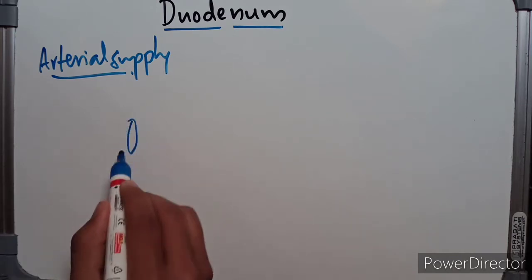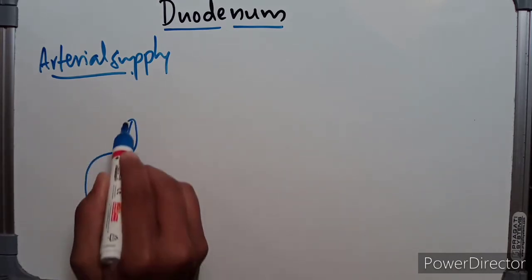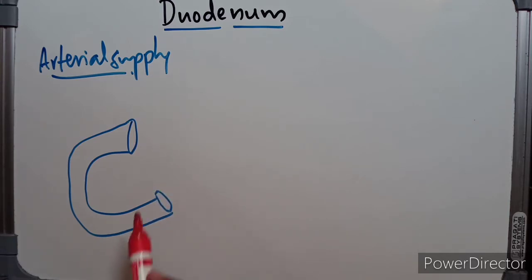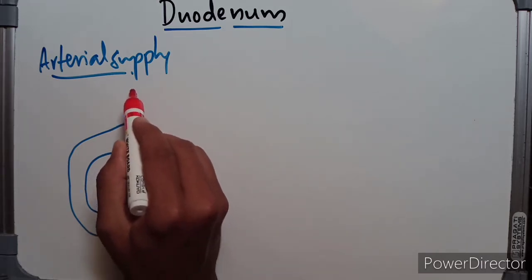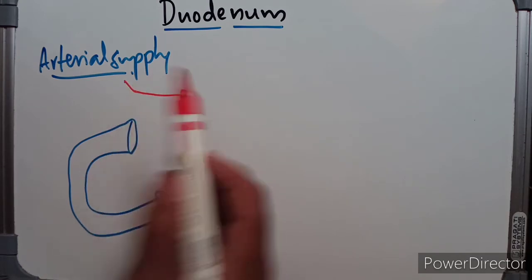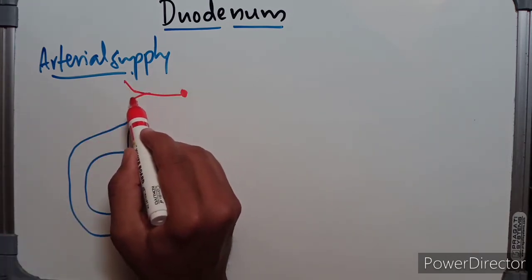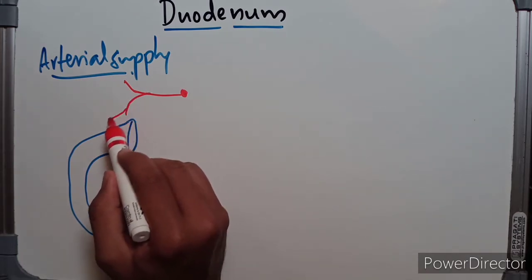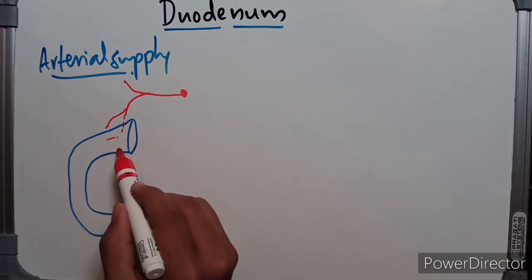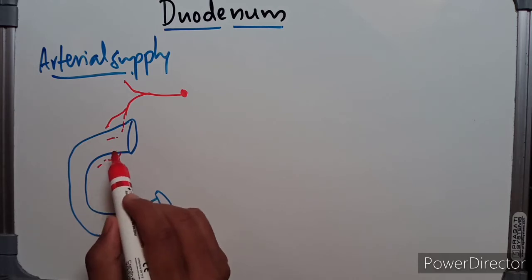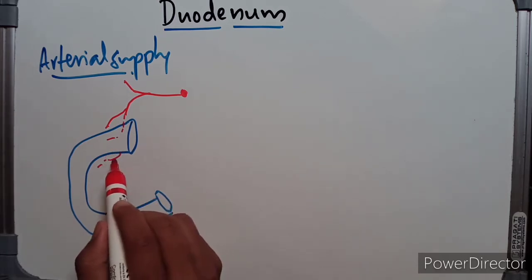The arterial supply of the duodenum is mainly from the common hepatic artery, which arises from the celiac trunk. The common hepatic artery gives two branches: the hepatic artery and the gastroduodenal artery. The gastroduodenal artery gives the supra-duodenal branch, the retro-duodenal branch, and also the infra-duodenal branch, which is nothing but the superior pancreaticoduodenal artery.